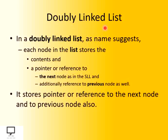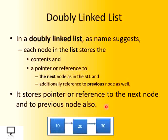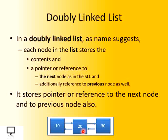So it stores a pointer or reference to the next node as well as the previous node, and here you can see how the doubly linked list looks like. These are nothing but the forward links and these are nothing but the backward links. So 10 will store the address of 20, 20 will store the address of 30, but 20 will also store the address of 10. So for node 20, the address of the next node as well as the address of the previous node are both available.